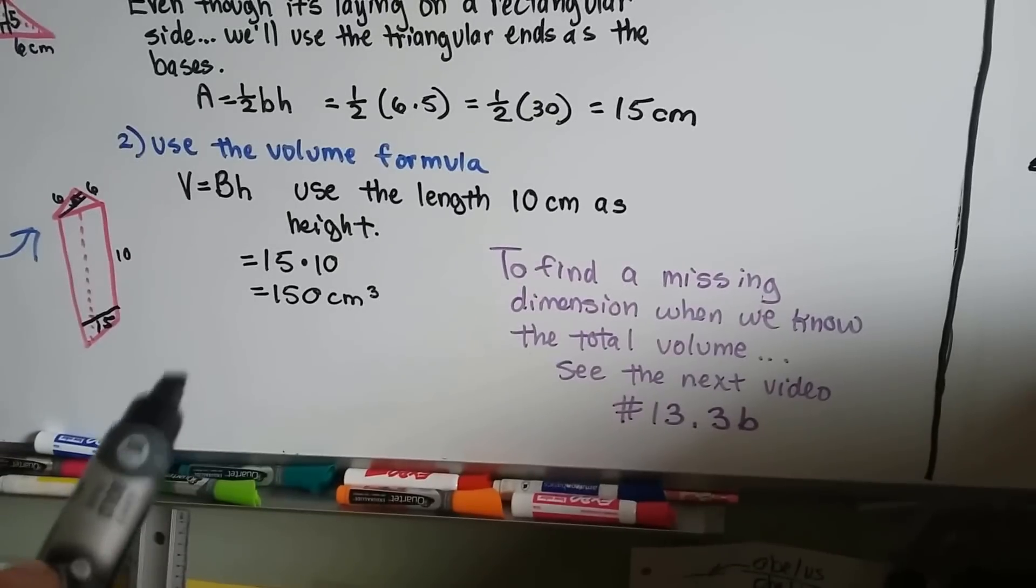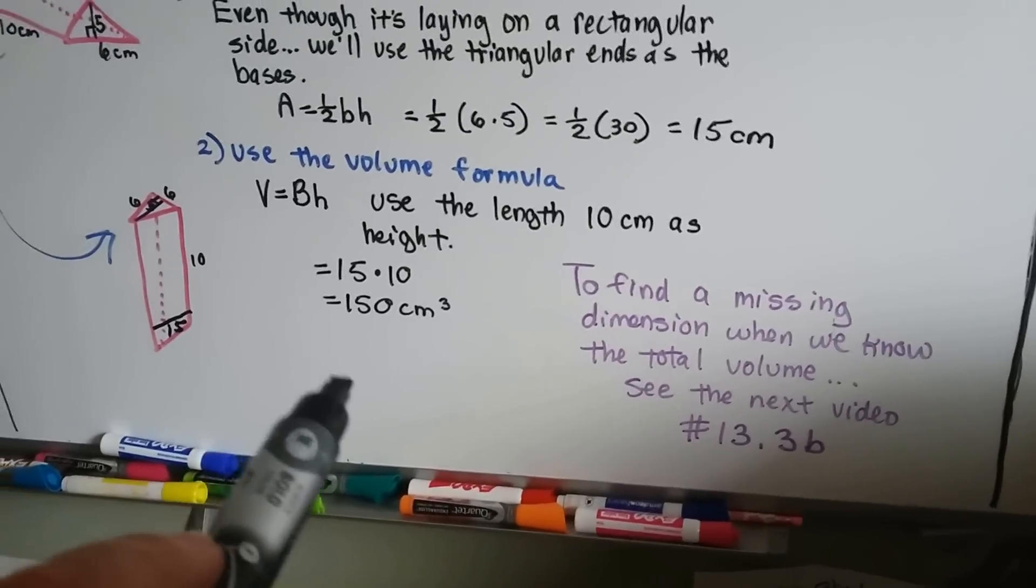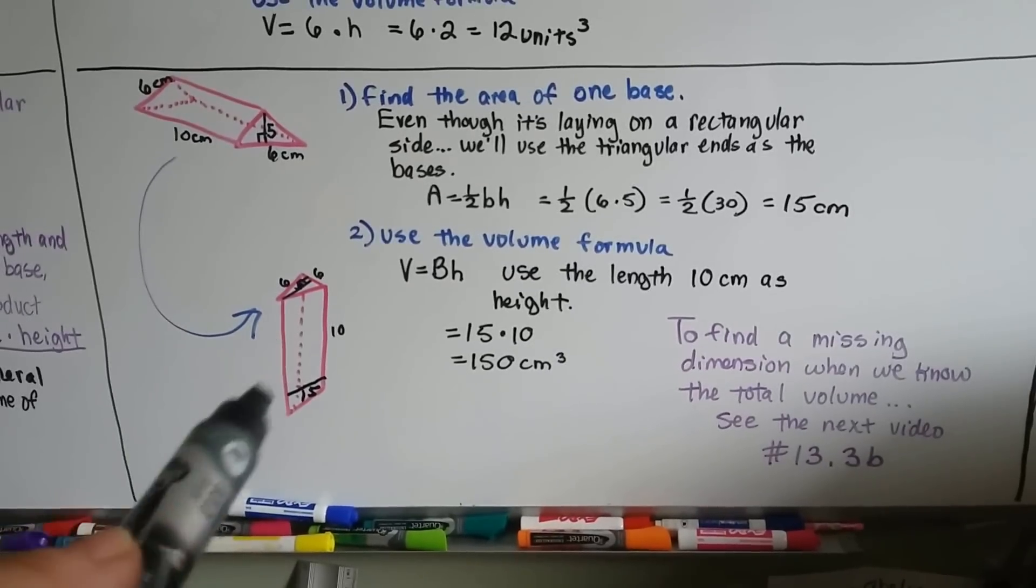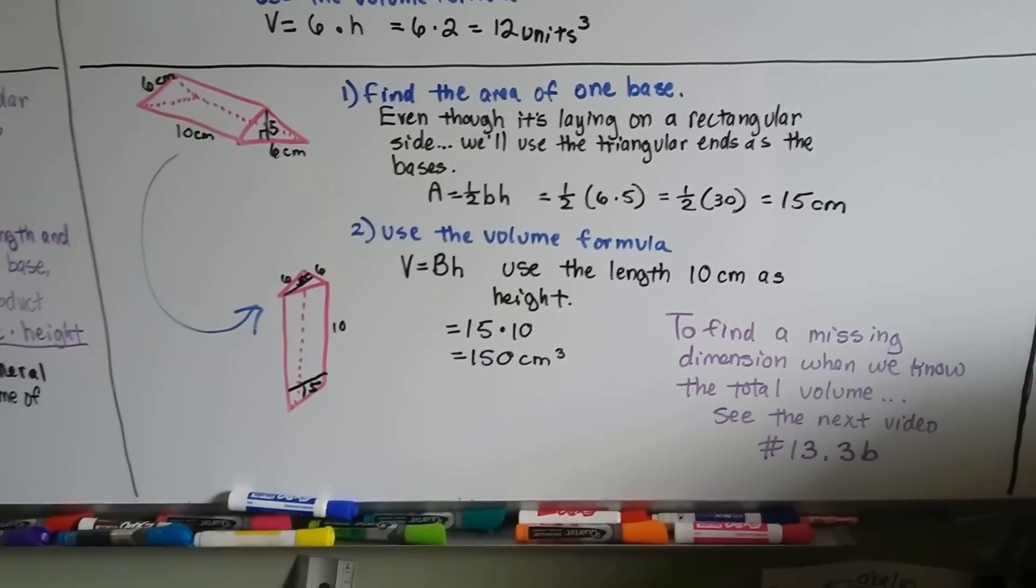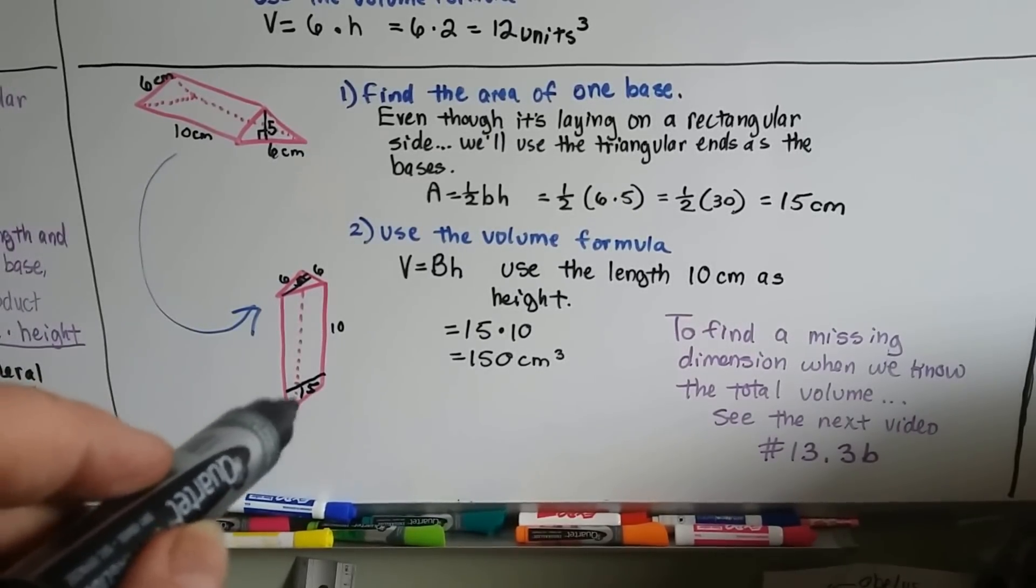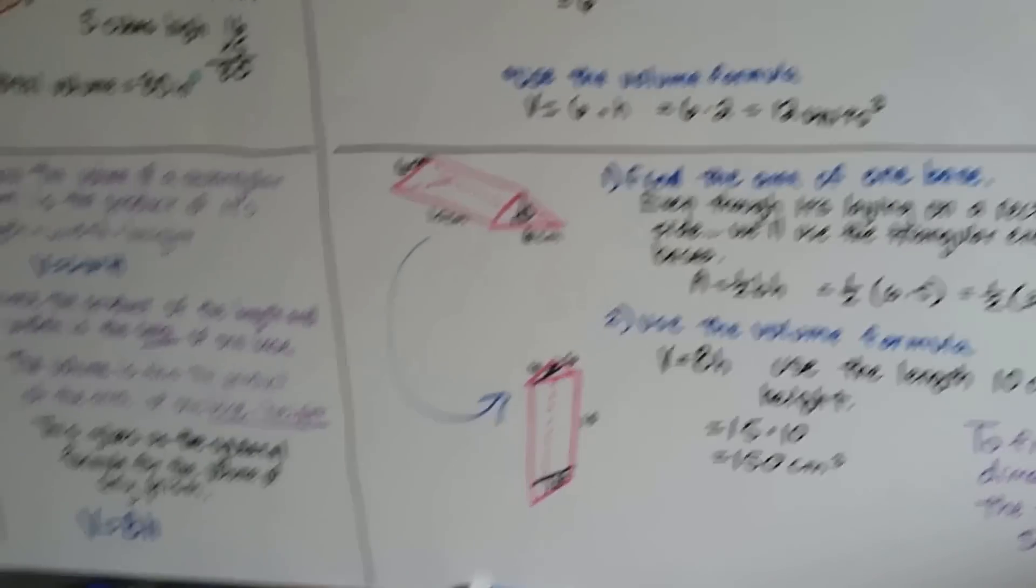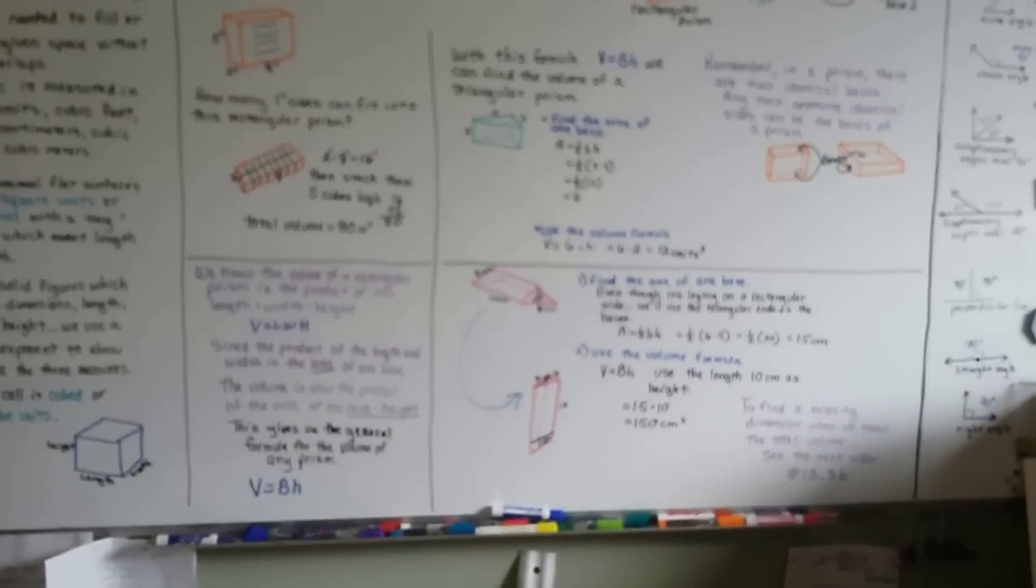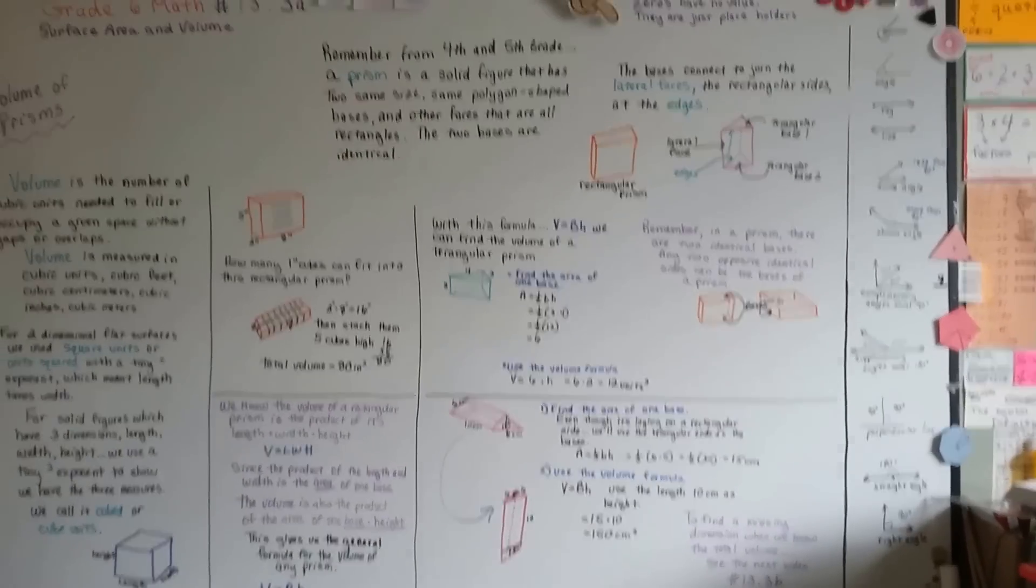To find the missing dimension when we know the total volume, see the next video, number 13.3b. I didn't have enough room and didn't want the video to be too long. If the total volume is like 254 cubic centimeters and one measure is missing, I'll show you how to find that in the next video. It's going to be 13.3b. I'll see you there.